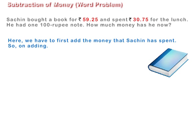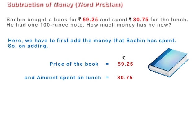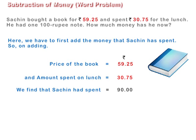Here we have to first add the money that Sachin has spent. On adding the price of the book, Rs. 59.25, and the amount spent on lunch, Rs. 30.75, we find that Sachin had spent Rs. 90.